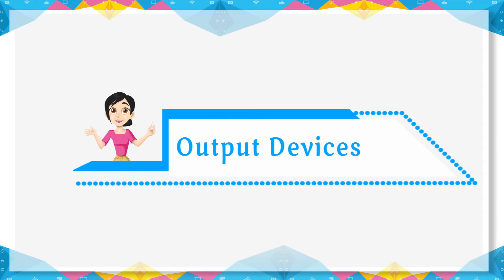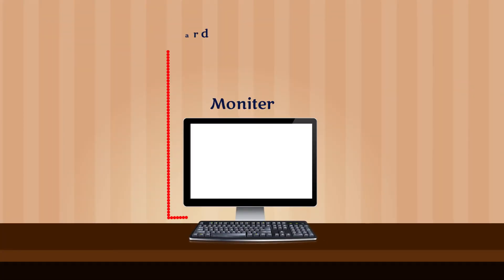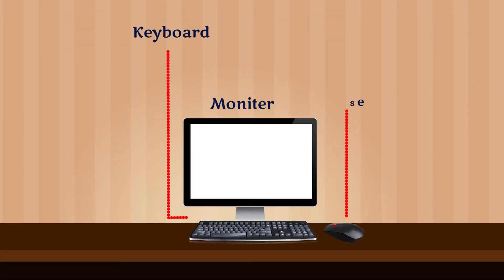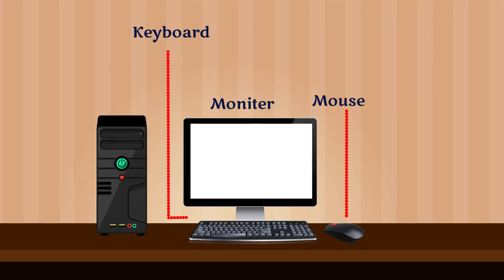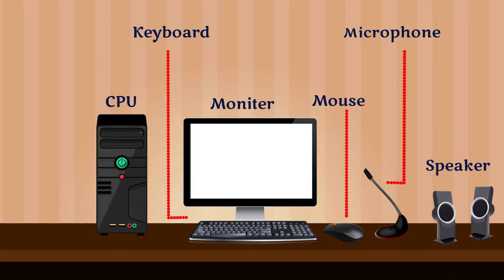Output devices: The parts of the computer which help us to show the result of processing are called output devices. Let's learn about output devices.